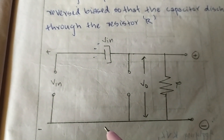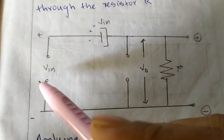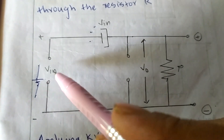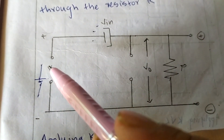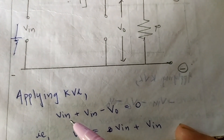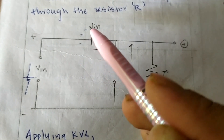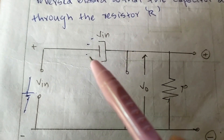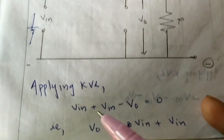We have a charge in this circuit. We have to apply the KVL. We have a charge in the KVL. We have to apply the V in. The V in is positive. We need V in. We need to have an increase voltage. We need to be positive. We need to get V in. The voltage is the voltage.